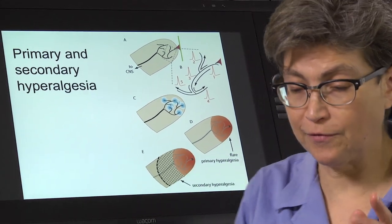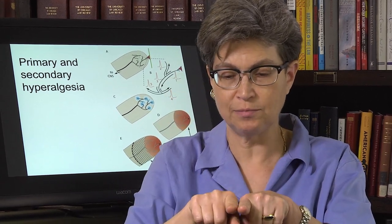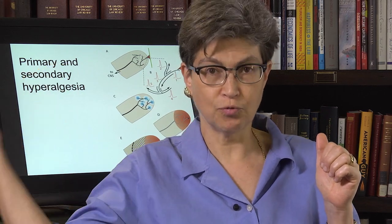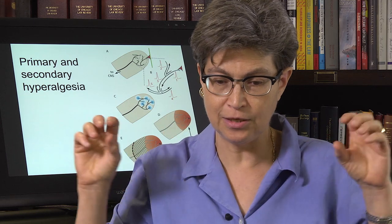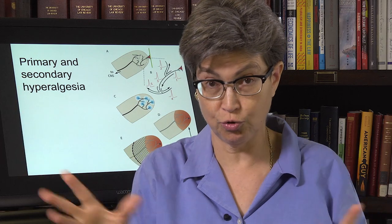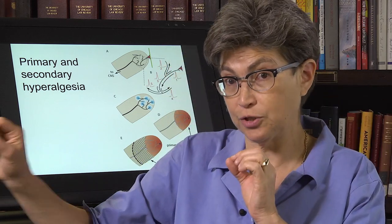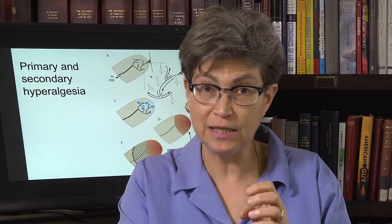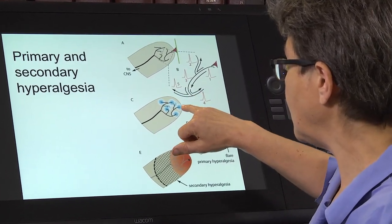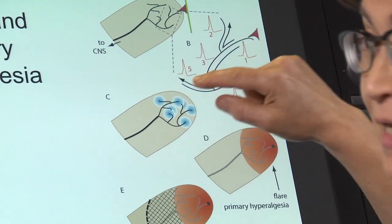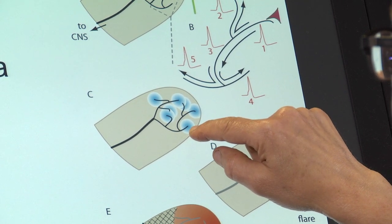There's one more peculiar thing we have to understand about dorsal ganglion cells. The cell body is in the dorsal root; there's a process that comes down and splits into a dendrite-like peripheral branch and an axon-like central branch. But these two branches are not as distinct as is typically true in a central neuron. So neurotransmitter is not only sent to the central branch — it's also sent to the peripheral branch. And so the peripheral branch, even though it's dendrite-like, can release neurotransmitter into the periphery from each ending.